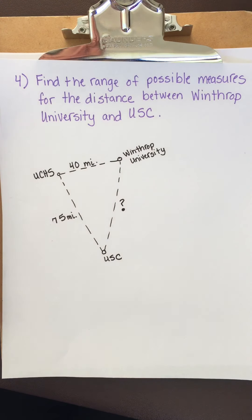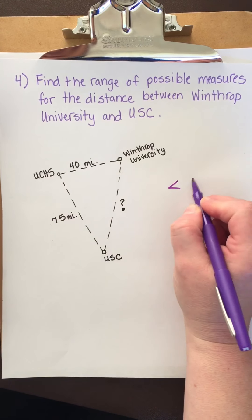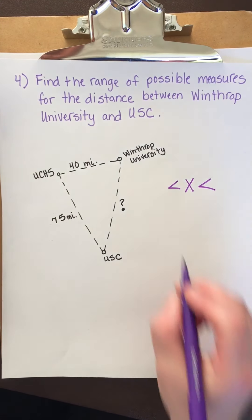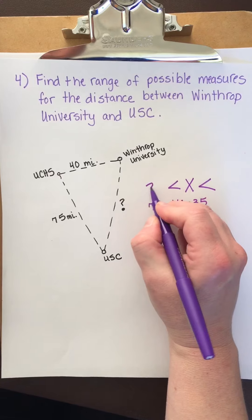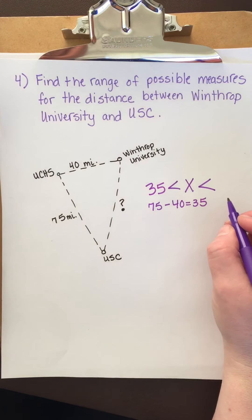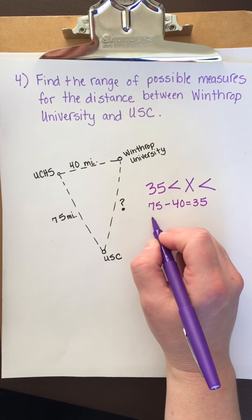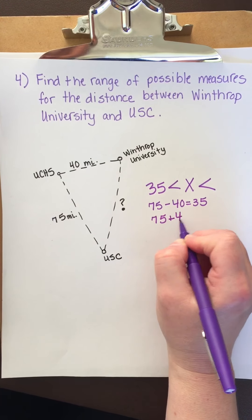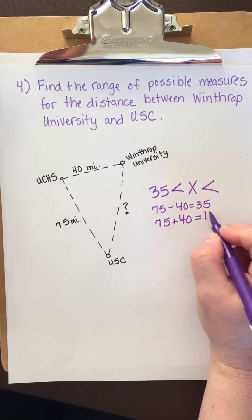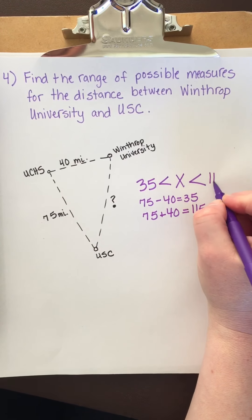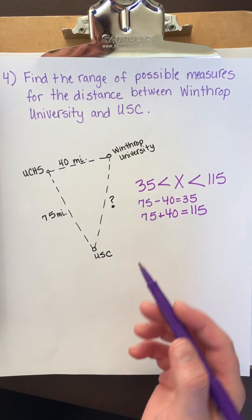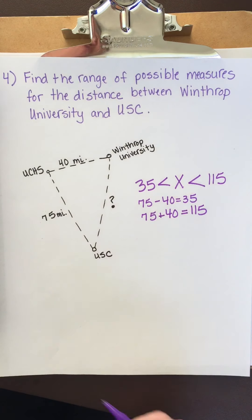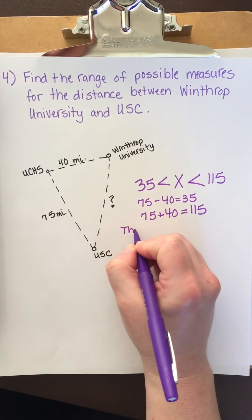So how far could this be? What are the possible values? What is the range of values? And we know how to do this because we just did it. I'm going to draw my compound inequality. First thing we're going to do is subtract those bad mamma jammas. So 75 minus 40 is 35. And then I'm going to add them. I don't have room over here, so I'm going to go down here. 75 plus 40 is 115. So the distance from Winthrop to USC is somewhere between 35 and 115 miles. I'm going to write that out in words.